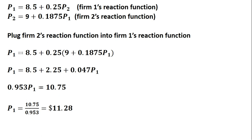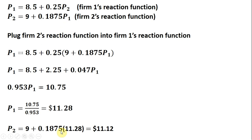To get firm two's optimal price, plug $11.28 into firm two's reaction function. Doing that, firm two's optimal price will be $11.12. I hope you found this video helpful.